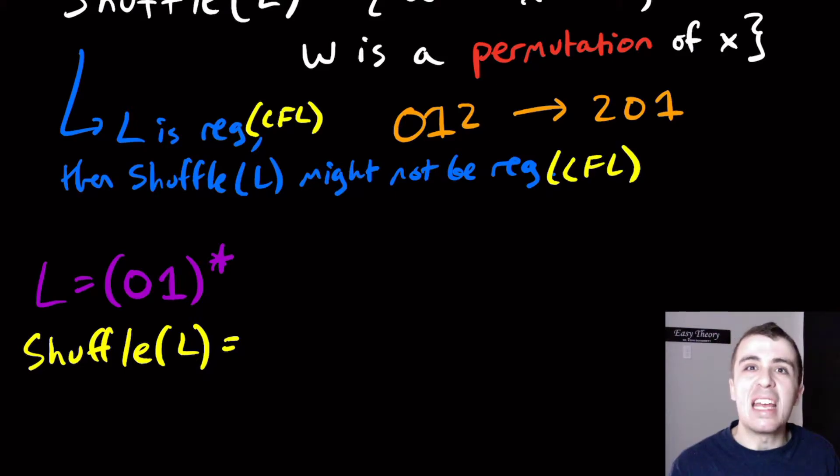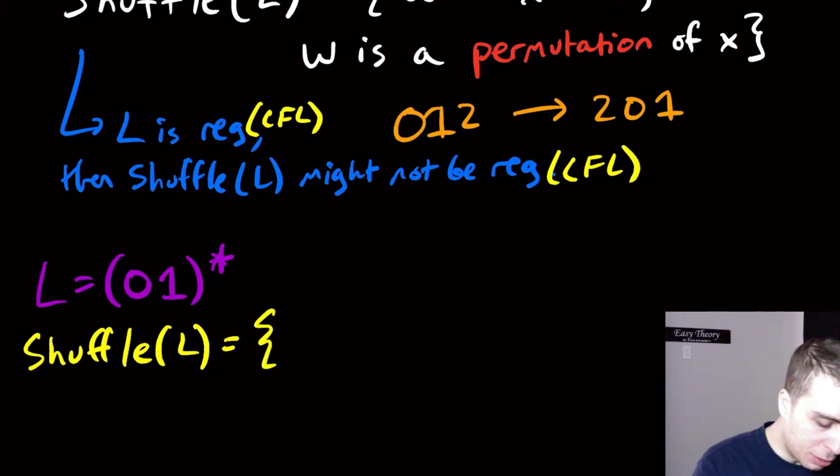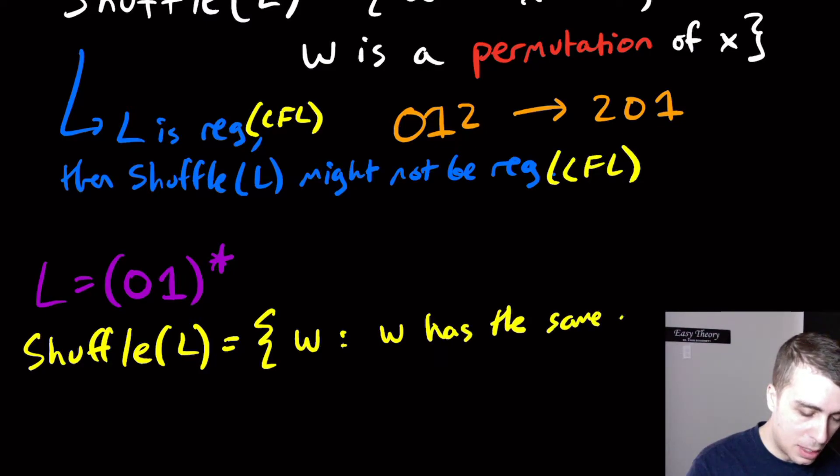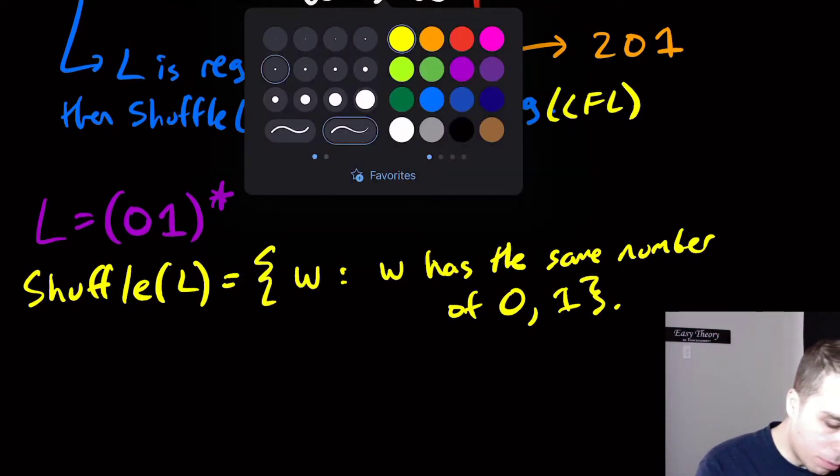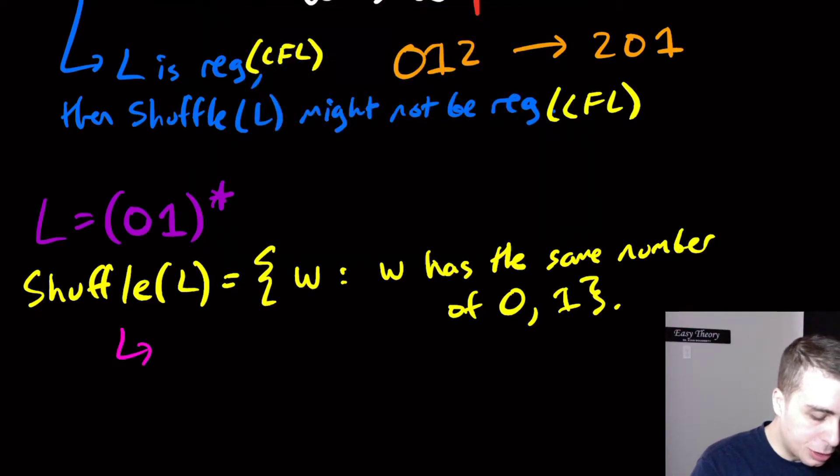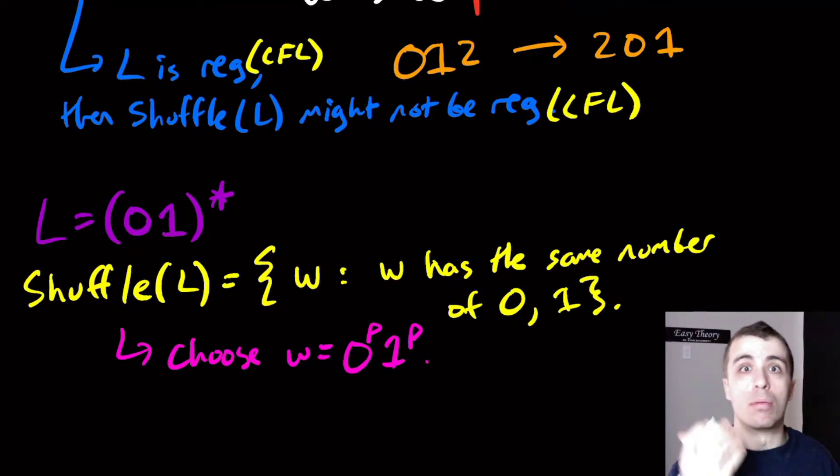Shuffle of L: if I rearrange this string in any way that I wish, then I will obtain every single string that has the same number of zeros and ones. This is all the strings W such that W has the same number of 0 and 1. That's pretty easily shown to be not regular. The way to show it is to choose the string to be 0 to the p, 1 to the p. Because not only is this string in the language, it has length at least p.